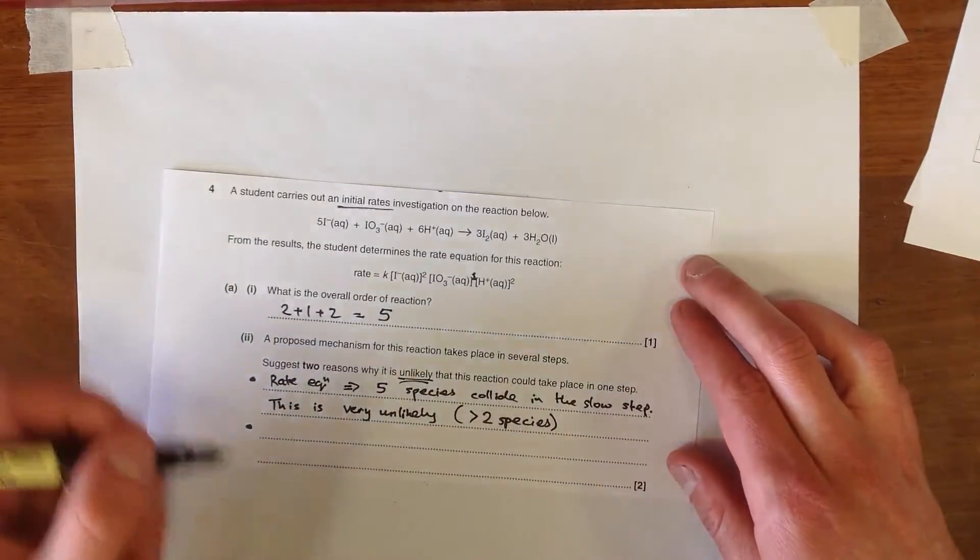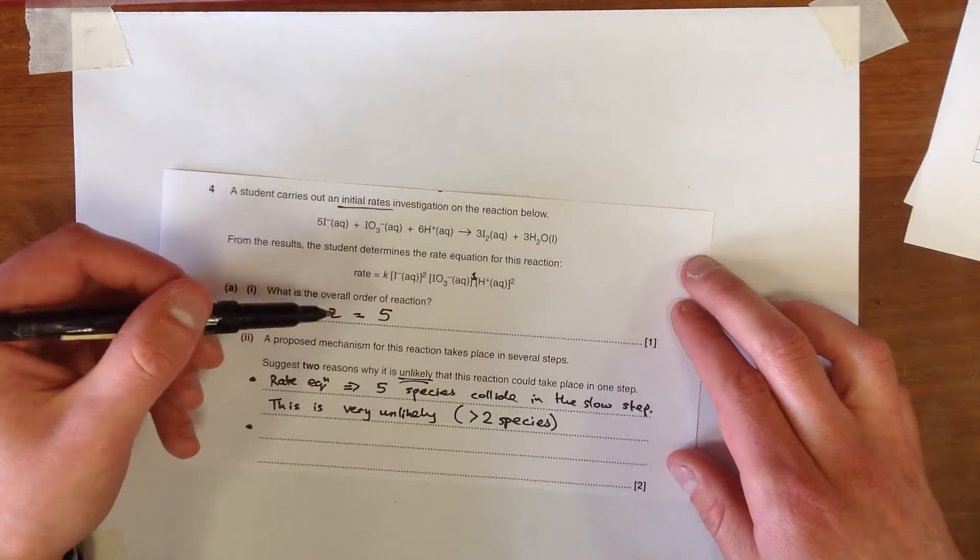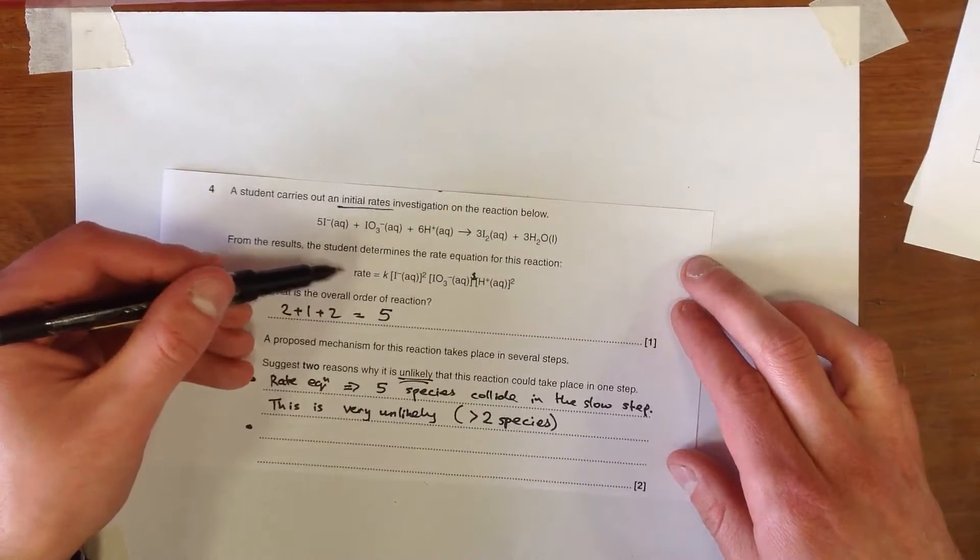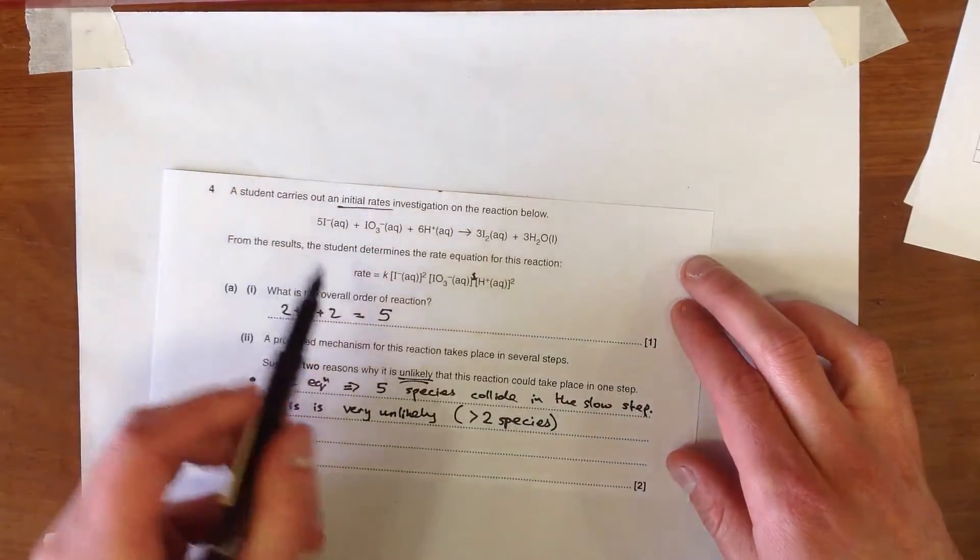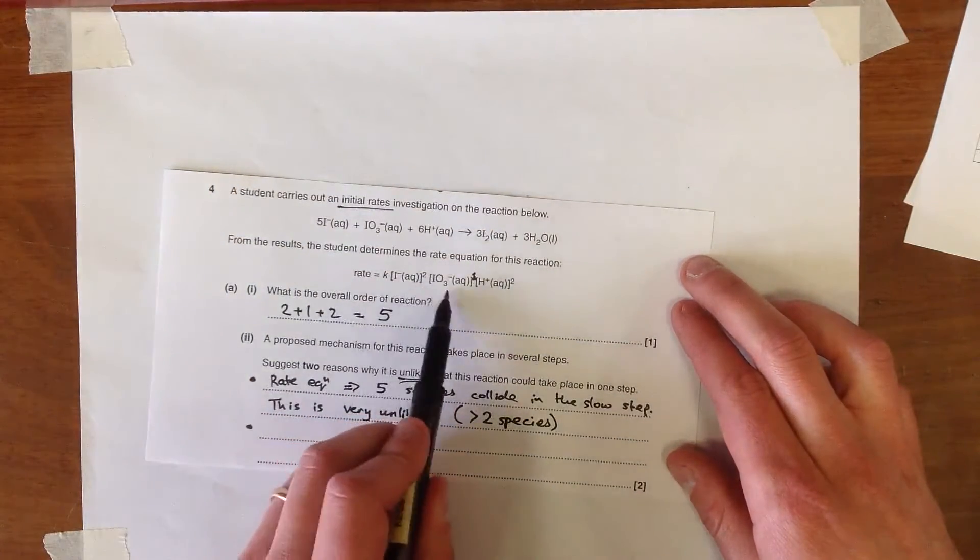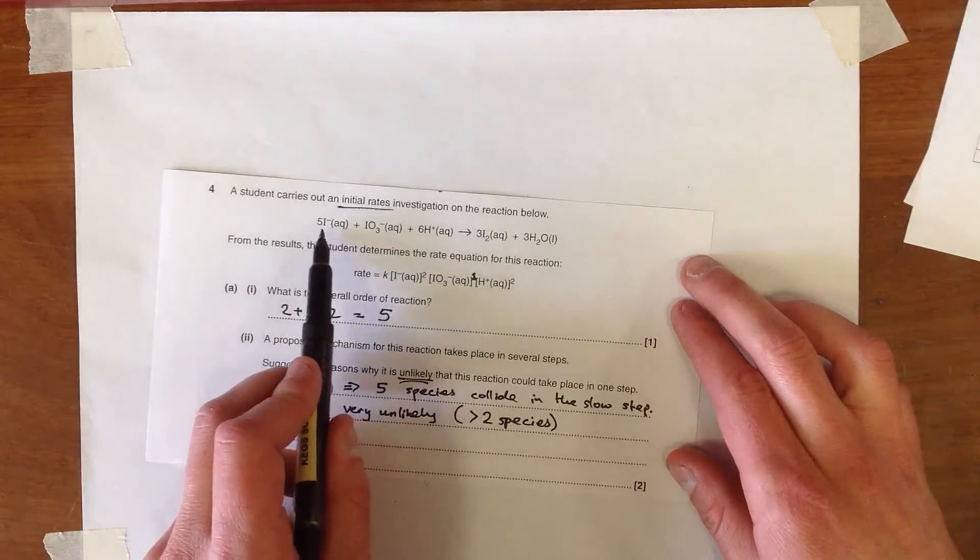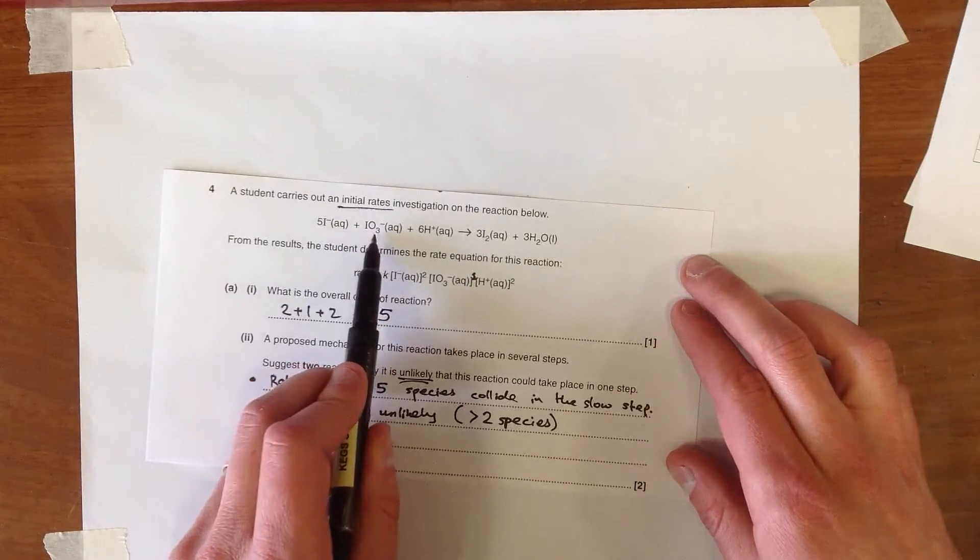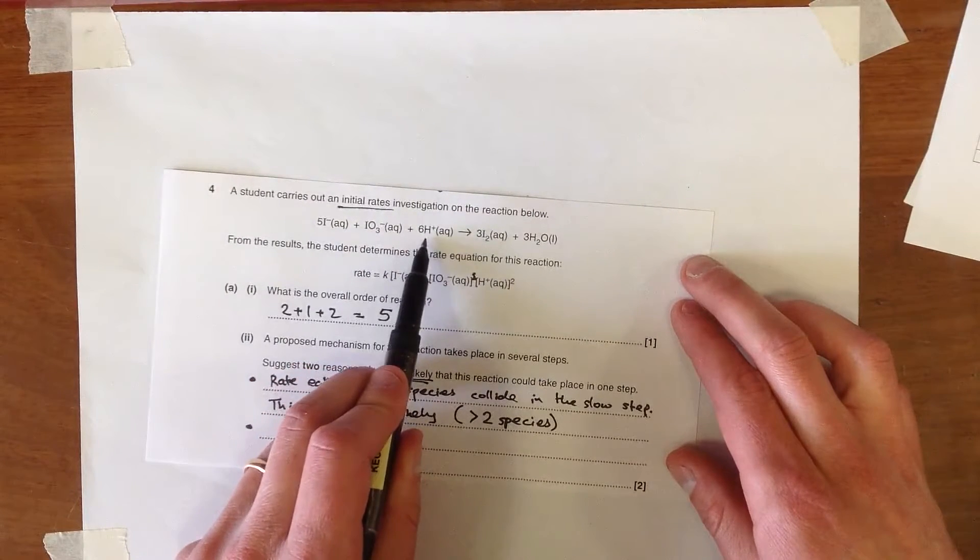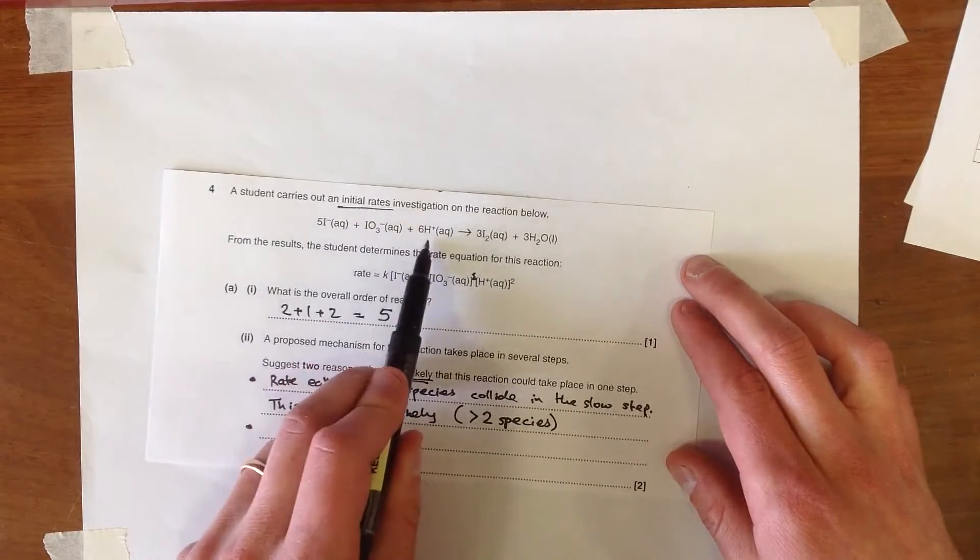And the other reason is that the mechanism of the reaction is not only going to be consistent with the rate equation but also with the overall equation. And if we notice here that if this were the only step in the reaction then we'd only have two iodides, one iodate and two H pluses. But actually we've got five, one and six.